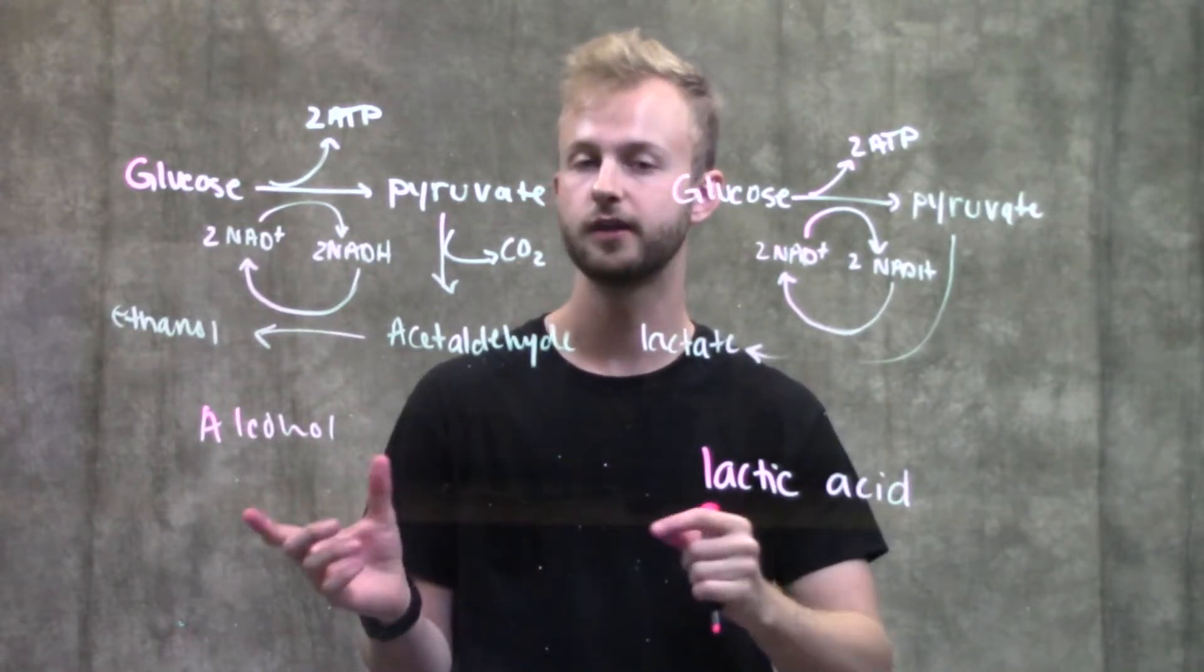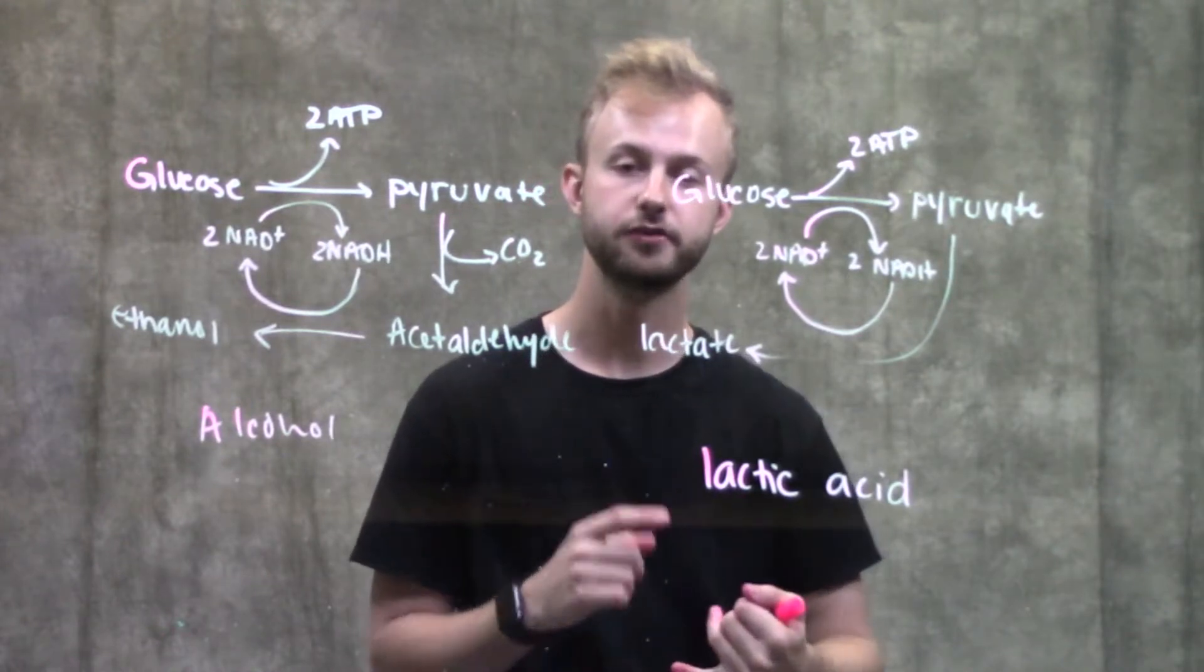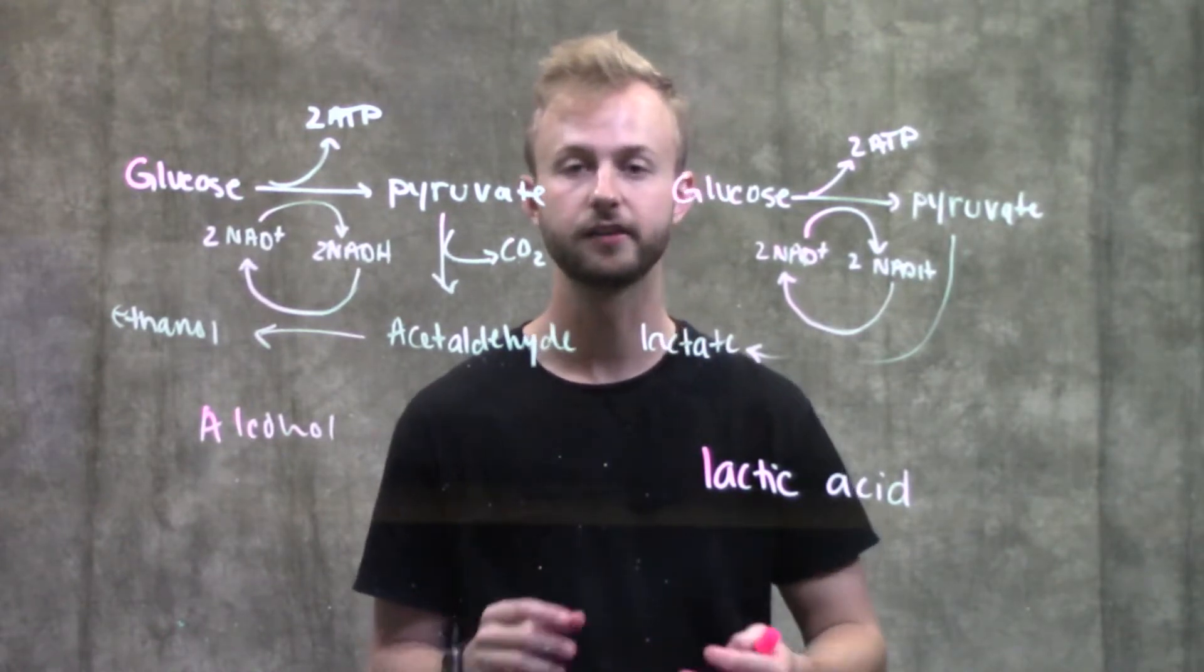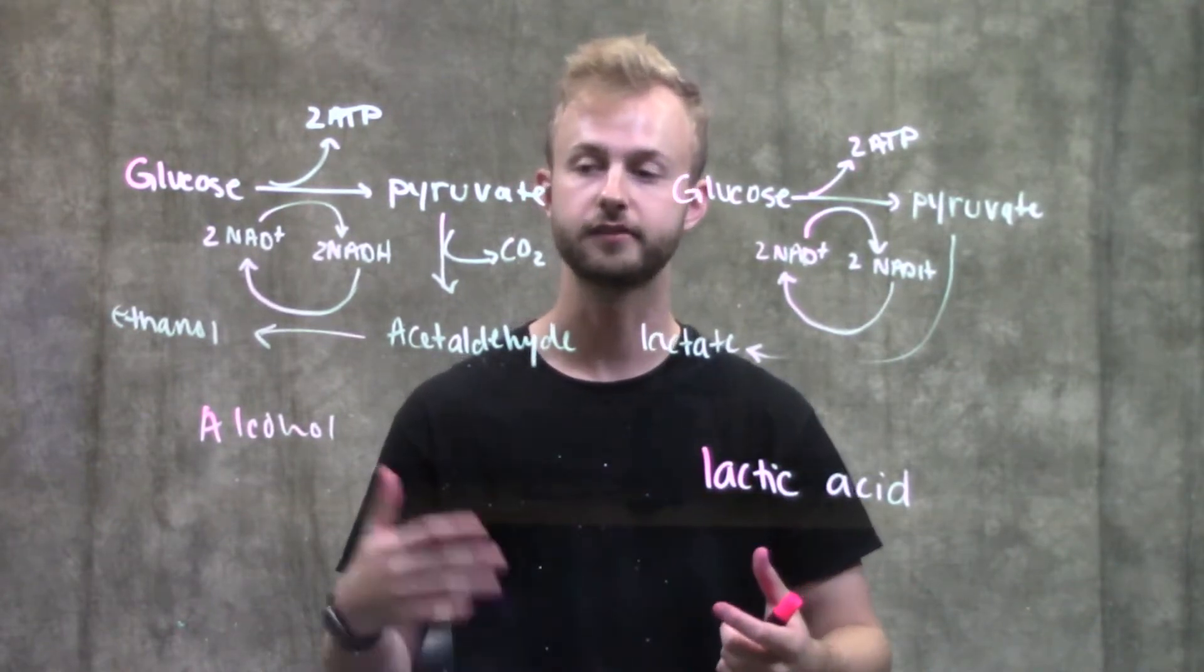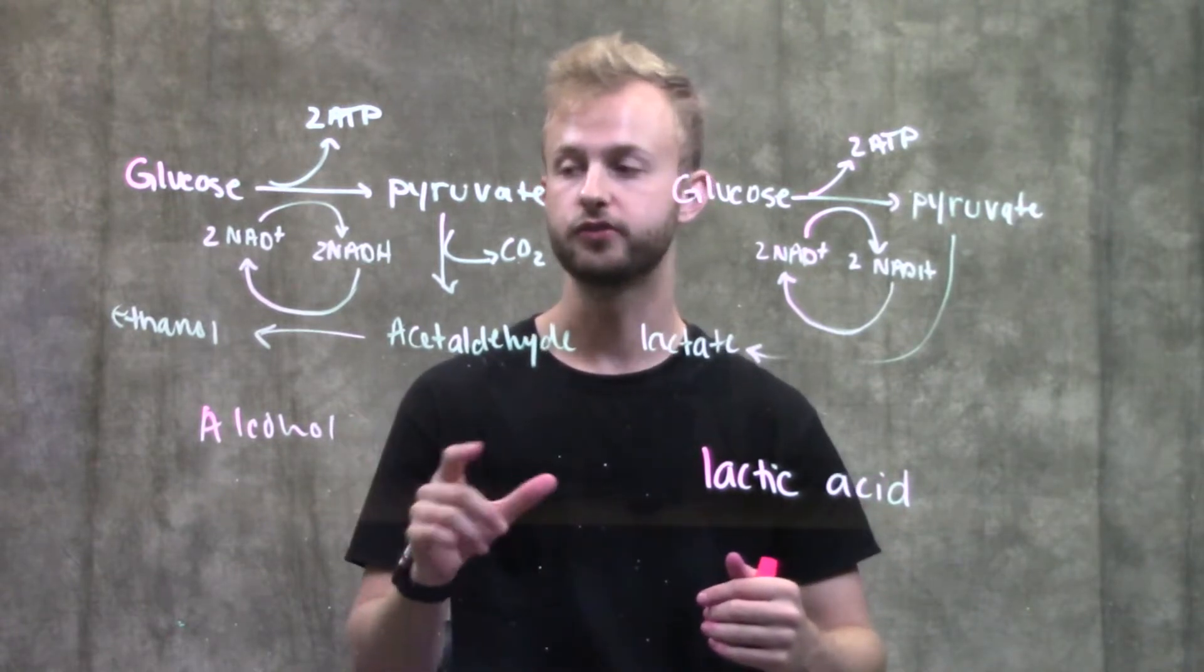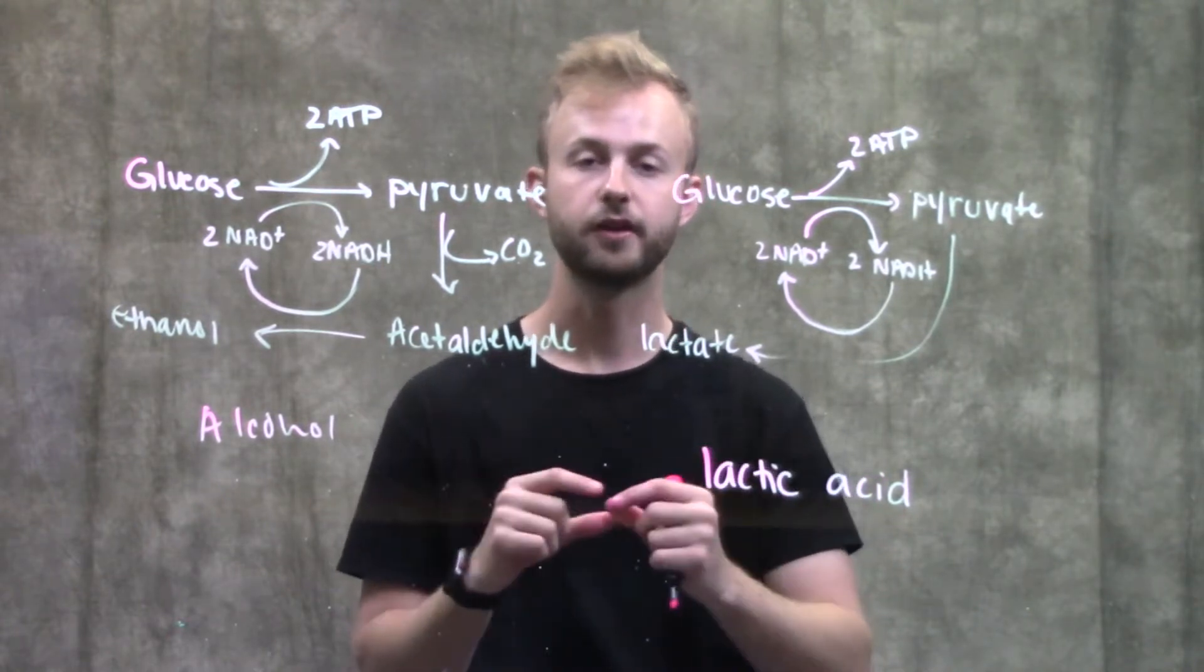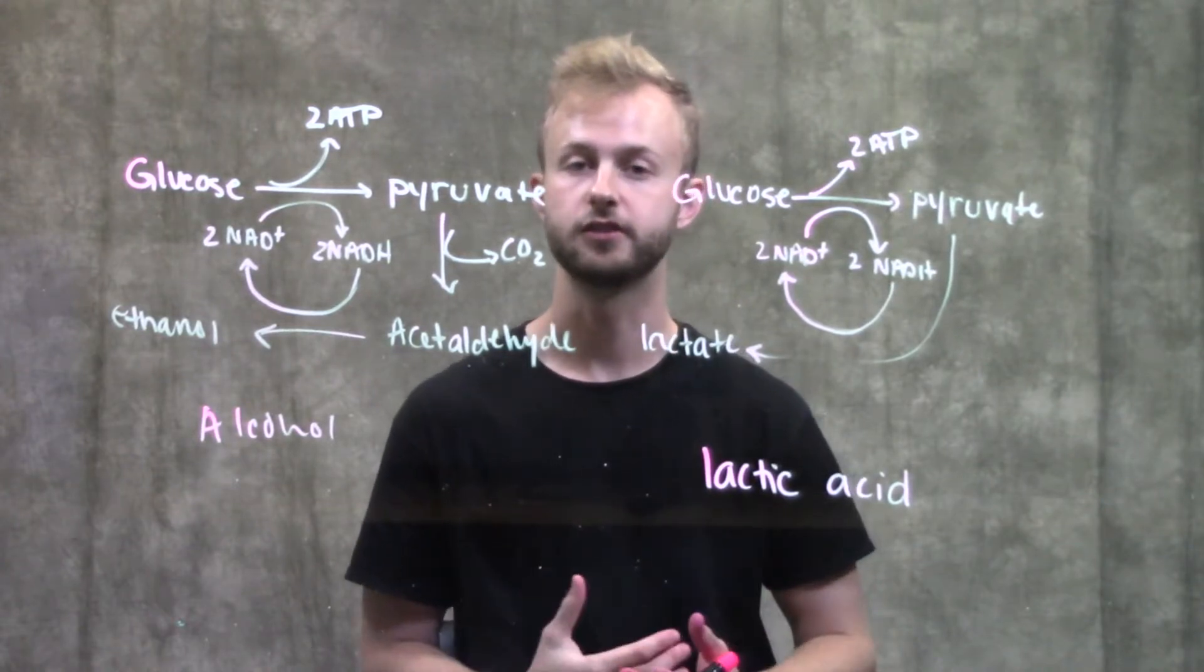Just a quick overview: the first step of any fermentation is glycolysis. We need that to produce ATP so our cells can keep going, as well as the NADH that we use to reduce things into the final products, either ethanol or lactate. When we use NADH to reduce things, it regenerates NAD+ so that glycolysis can keep running and producing ATP for our cells.